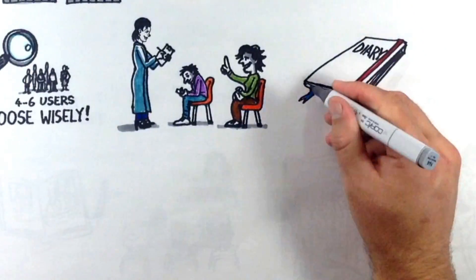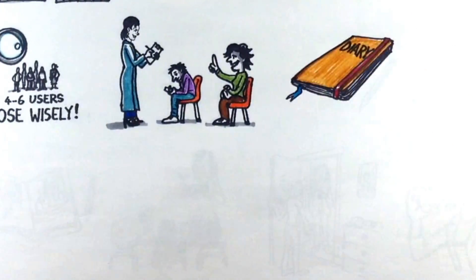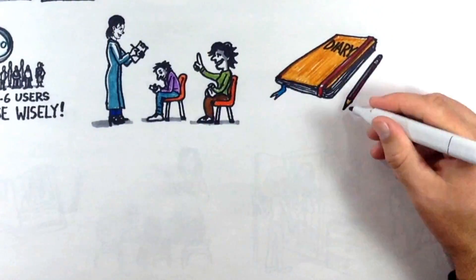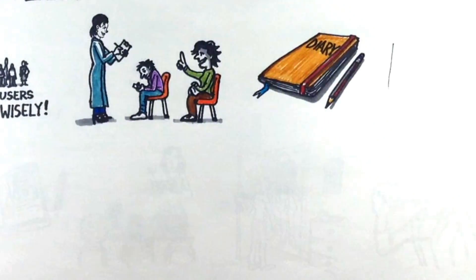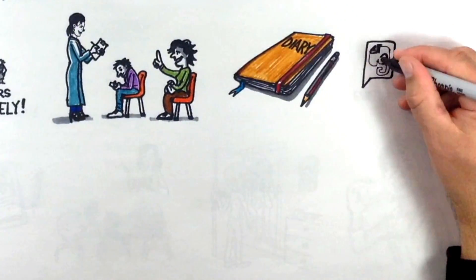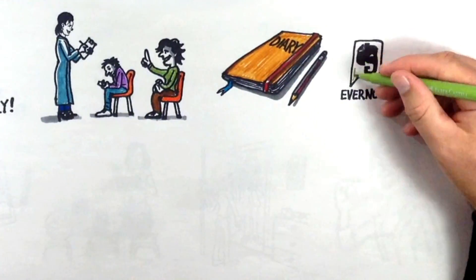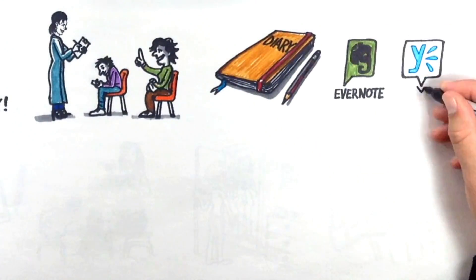You'll need to brief your participant on what you want them to do over the diary period and give them either a physical book to record daily insights, or maybe you could try an online tool to help you engage with them daily. For that purpose, we tend to use Evernote and Yammer.